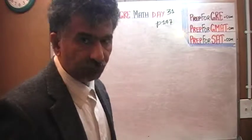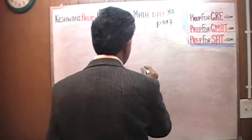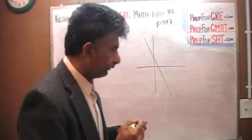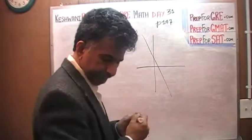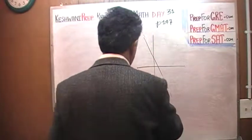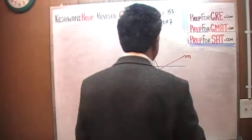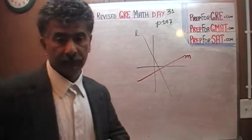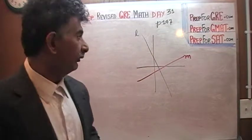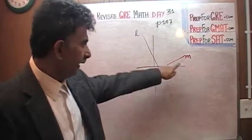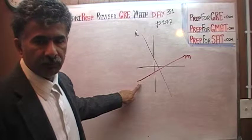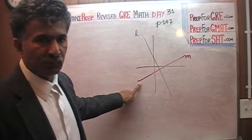Let's do one more. Here are the two lines — let's call it line L and line M. Which line has a greater slope? Well, this is a tricky question. Line L is very steep and line M is very flat. So based on what we just said — the steeper the line, the greater the slope — that statement needs to be qualified.